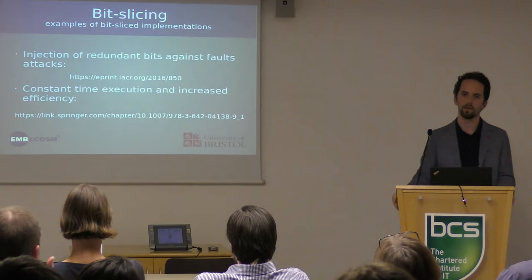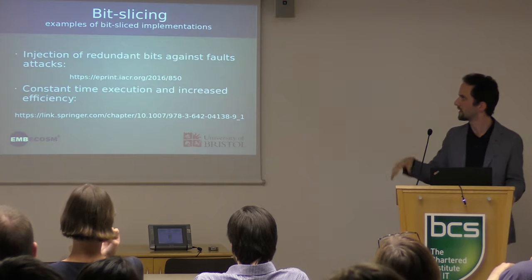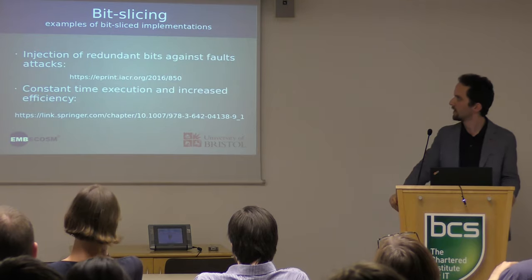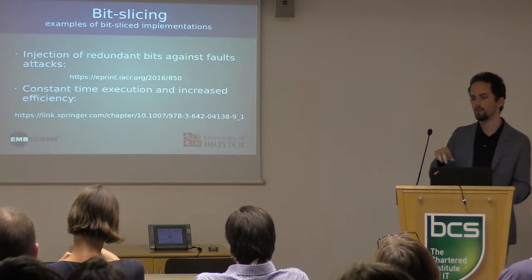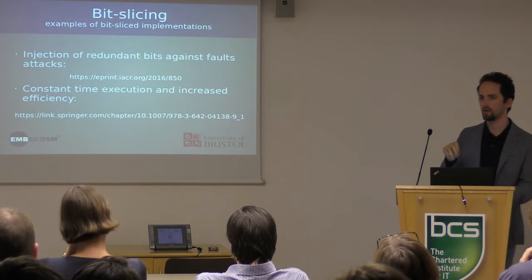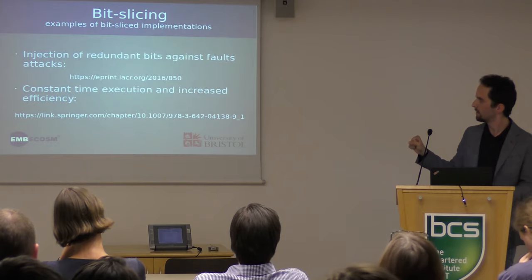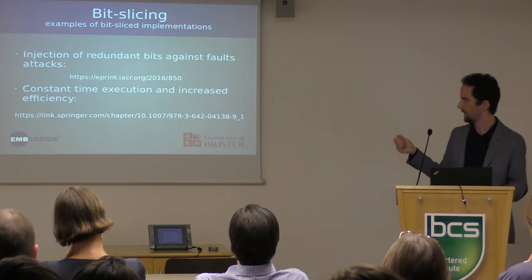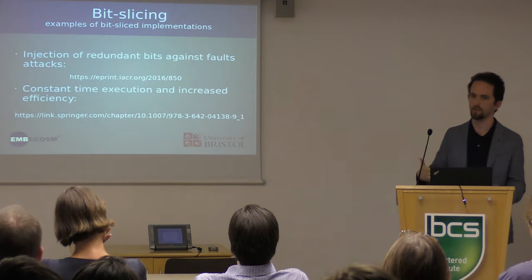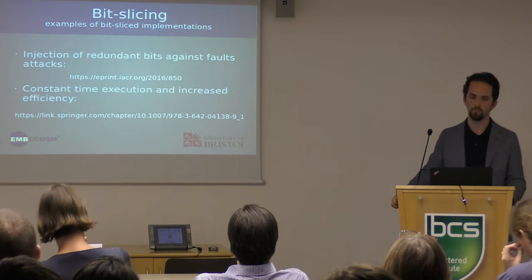A block cipher is a deterministic and invertible transformation of a fixed-length group of bits. That's what lets us adopt this technique of using more blocks in parallel — and since it is deterministic, we apply the same operation on all the blocks we are processing. There are a couple of examples of orthogonalized algorithms: the first uses a BitSliced version of an algorithm to introduce redundant bits to make the decoder stronger against fault attacks, and the second is about a constant-time version of the AES algorithm that also takes into account the increased efficiency from processing more input at a time.